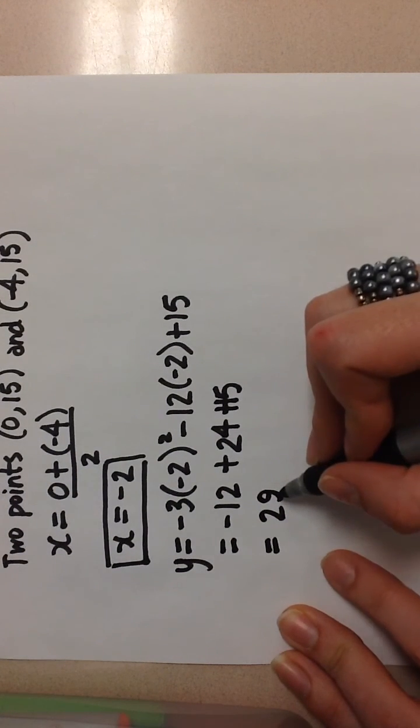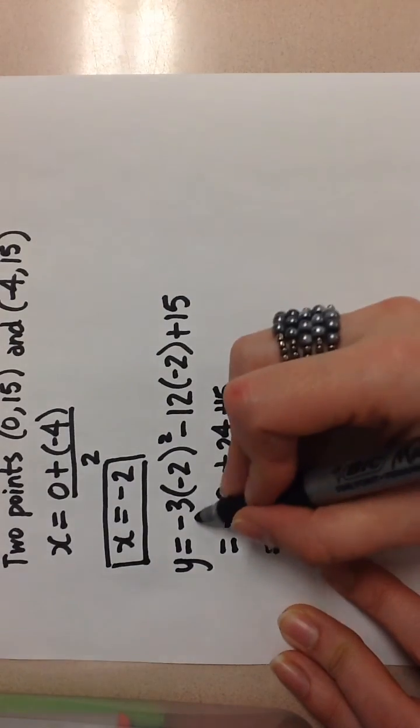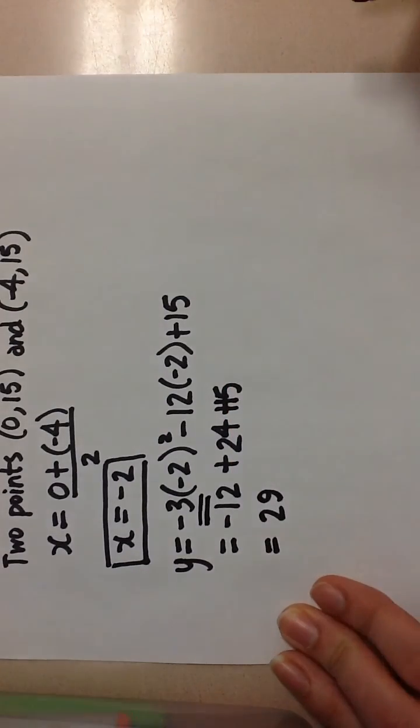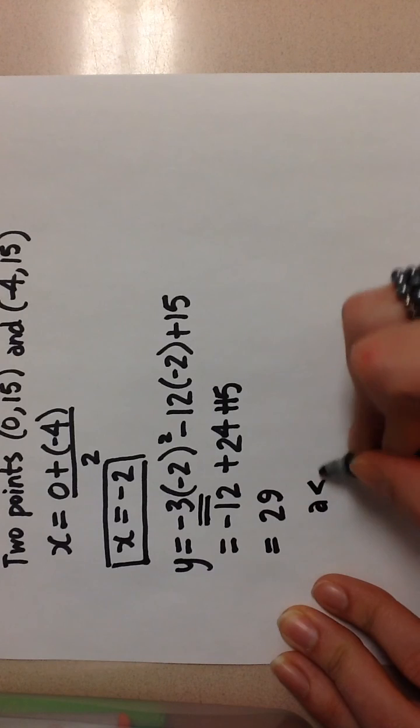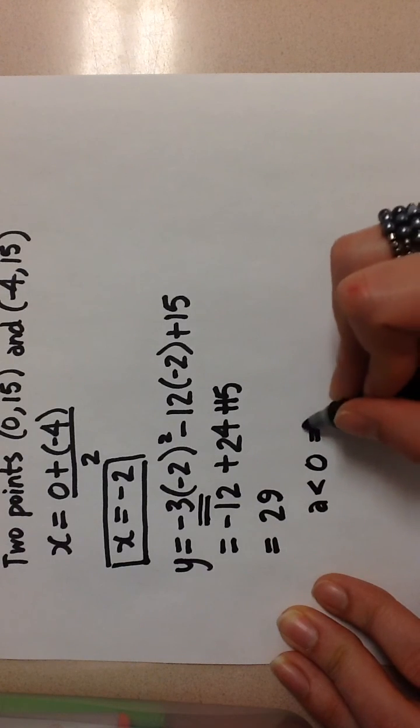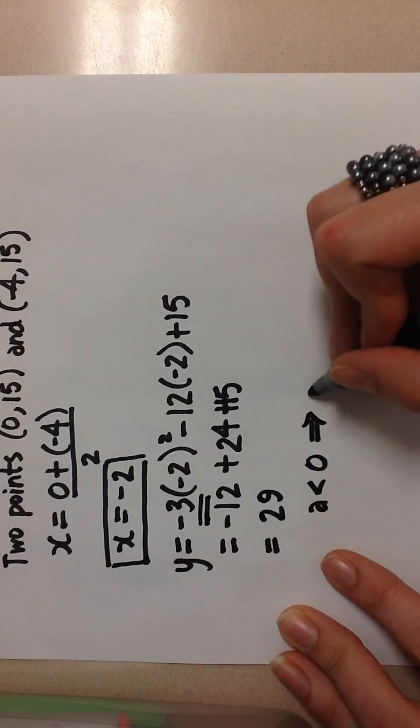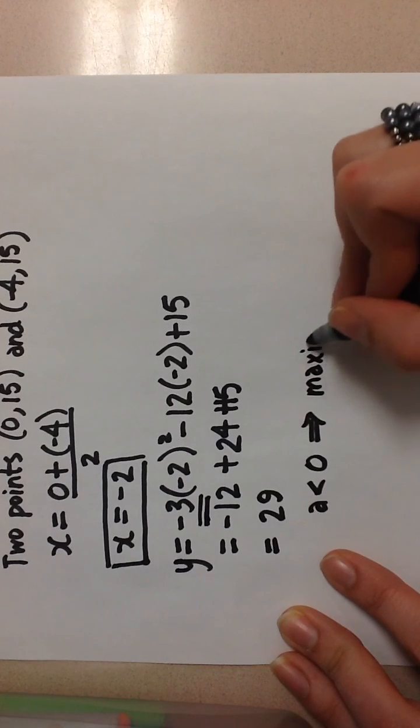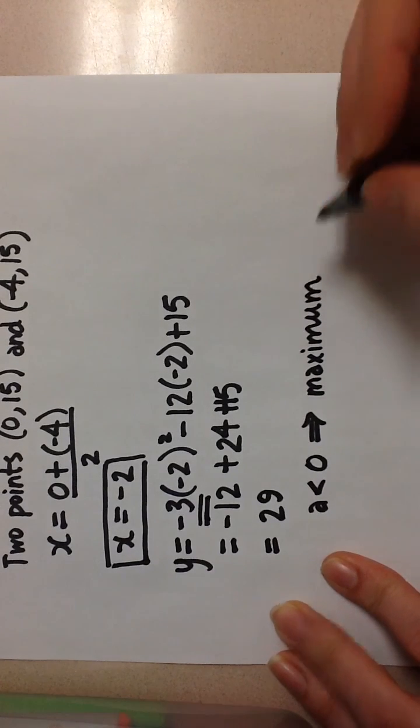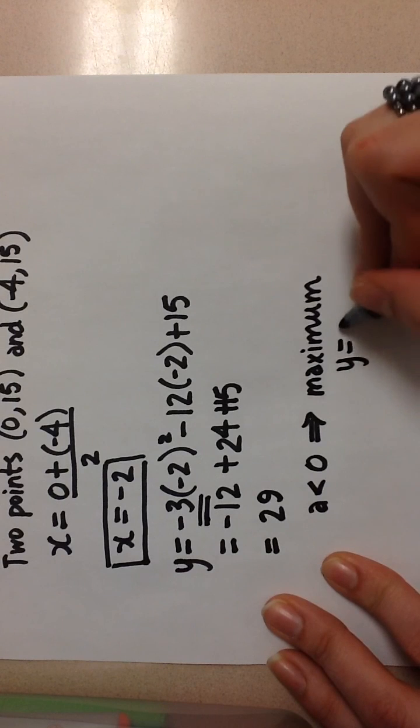Now because the a value of the quadratic is negative, I know that the optimum value here is going to be a maximum with the value of 29.